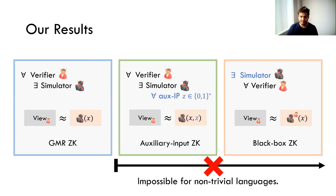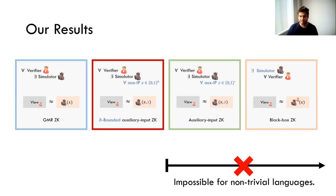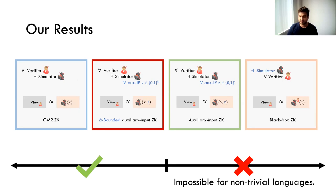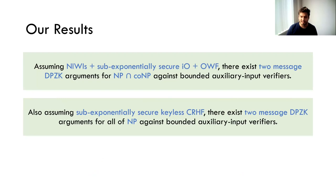Given this understanding, there are lots of gaps in characterizing when deterministic prover zero knowledge is possible. Our result aims to fill in this gap. We split auxiliary input ZK into two parts: the new one is B-bounded auxiliary input ZK, which says there is some polynomial bound B on the amount of auxiliary input fed to the verifier. We show you can have zero knowledge satisfying either GMR ZK or B-bounded auxiliary input ZK with a deterministic prover. Specifically, assuming non-interactive witness indistinguishable proofs, sub-exponentially secure indistinguishability obfuscation, and one-way functions, there are two-message DPZK for NP intersect co-NP.